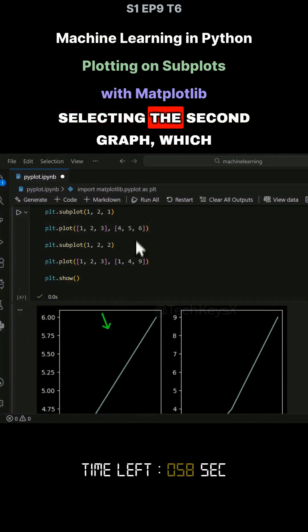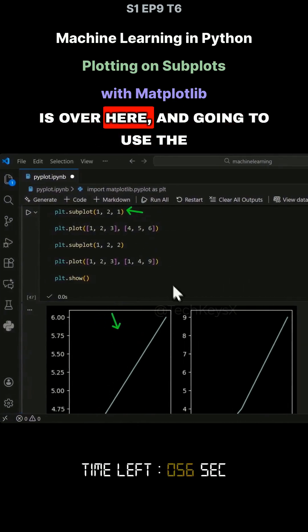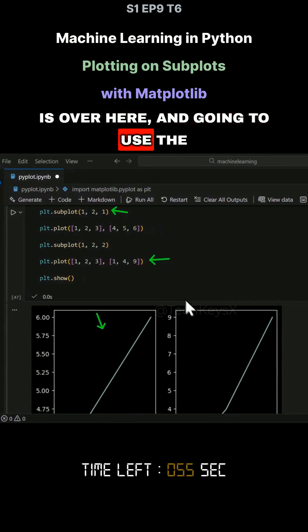So what's happening is, it's now selecting the second graph, which is over here, and going to use the plot function on that second graph, which is over here.